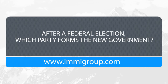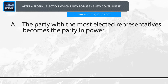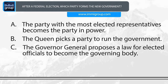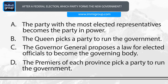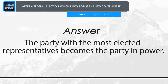After a federal election, which party forms the new government? A. The party with the most elected representatives becomes the party in power. B. The Queen picks a party to run the government. C. The Governor General proposes a law for elected officials to become the governing body. D. The Premiers of each province pick a party to run the government. Answer: The party with the most elected representatives becomes the party in power.